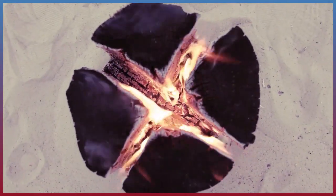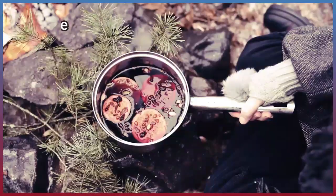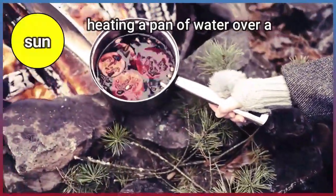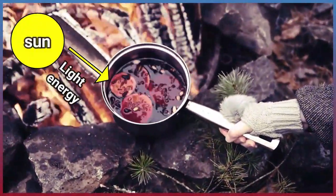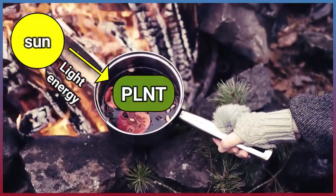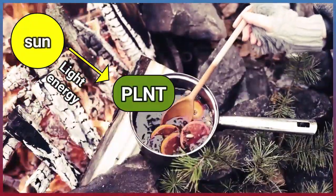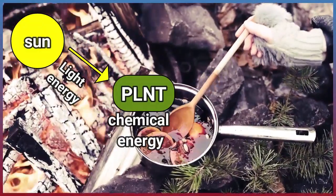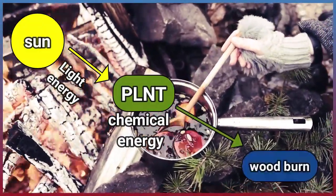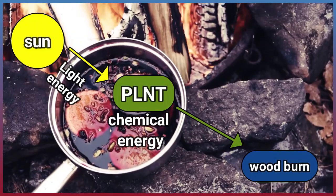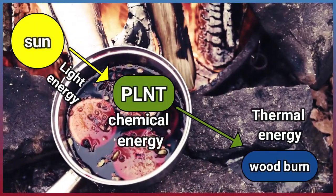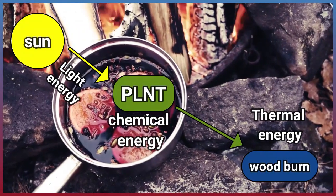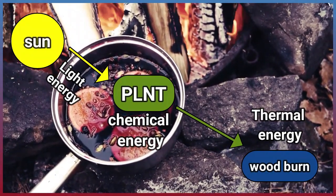Let's start with a simple example: heating a pan of water over a fire. The light energy of the sun helps a tree grow, and the energy is stored in the tree as chemical energy. When the wood is burned, it releases thermal energy that heats the water.